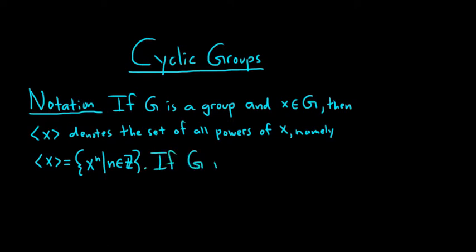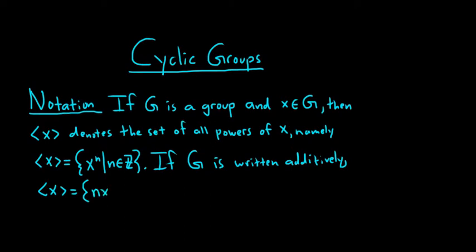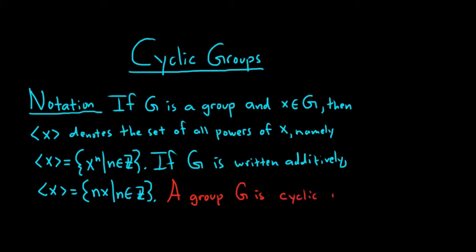If g is written additively, then the set can be written as follows: it's the set containing all nx, such that n is an integer. So what is a cyclic group? We say a group g is cyclic if there exists some x in g such that g is equal to angle bracket x angle bracket.